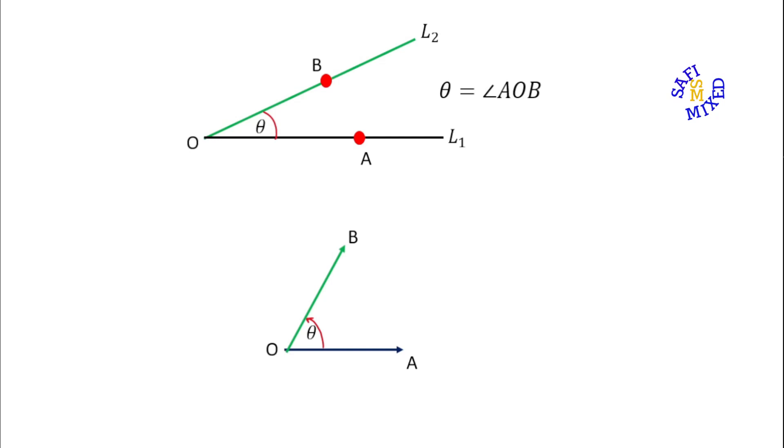We see the rotation could be clockwise or anticlockwise. The clockwise rotation is usually taken negative and the anticlockwise or counterclockwise rotation is considered positive. The ray OA is called initial side and OB is called terminal side.